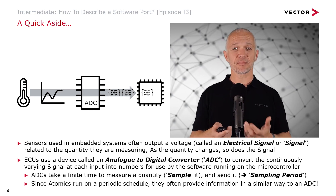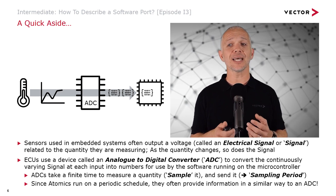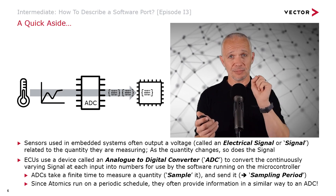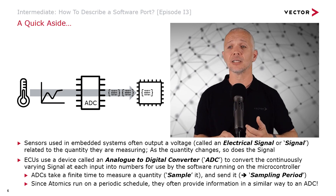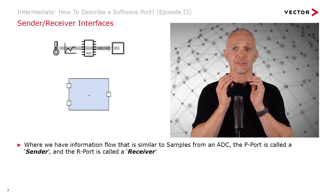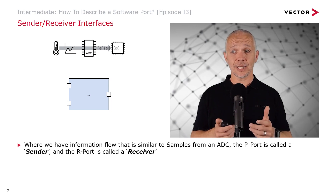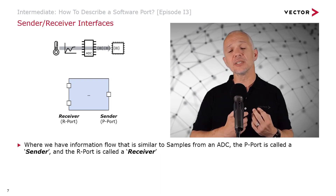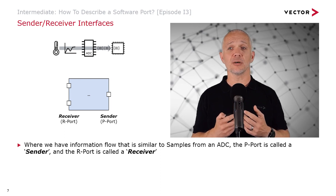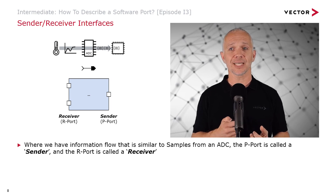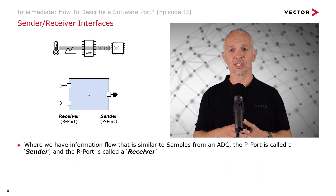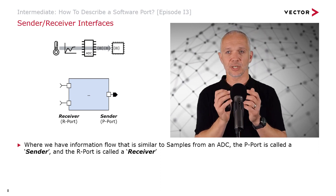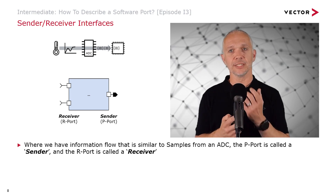Atomics run on a periodic schedule inside ECUs, which means they often provide information in a similar way to an ADC — they output a number each time they get executed, so there's a kind of periodic pulse of information. Where we have an information flow that is similar to samples from an ADC, the P port we call a sender and the R port we call a receiver. We provide a graphical notation to help distinguish between them, drawing that arrow left to right and applying it to the ports.